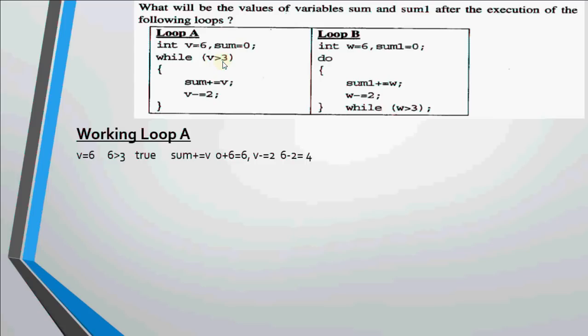Yes, 6 is greater than 3. It's true. So it comes here and we add that v to sum. It's written sum plus equal to v. That means sum should be added with v and whatever is the result, that should be stored back in sum. So sum is initially 0 and v is 6. So 0 plus 6 gives me 6.